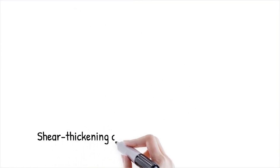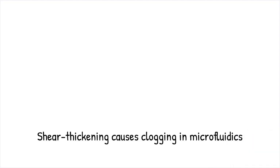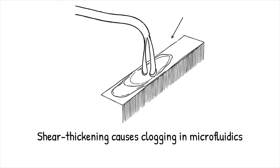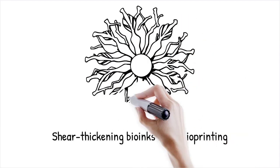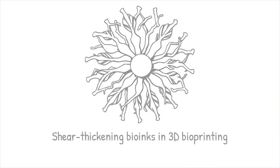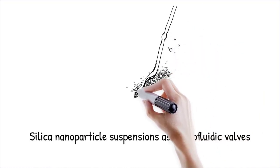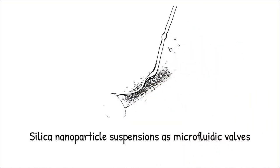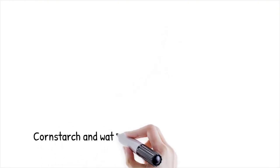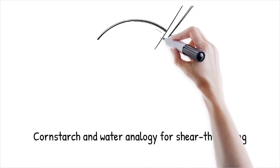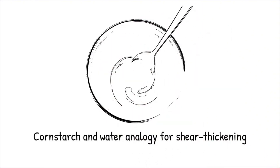Shear thickening fluids increase in viscosity as shear stress rises, leading to potential clogging or jamming in microfluidic channels. Understanding and controlling this property is crucial for designing high-shear applications such as microfluidic mixing or impact-resistant materials. These fluids are often used in specialized bio-inks for 3D bioprinting, where rapid solidification upon deposition is advantageous. Aqueous suspensions of silicon nanoparticles display shear thickening behavior, allowing them to transition from liquid to solid-like states under pressure, useful for microfluidic valve systems. Shear thickening fluids are like cornstarch mixed with water — when stirred gently it flows, but under sudden force it solidifies.